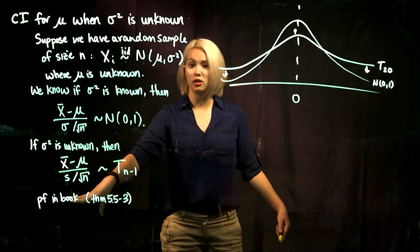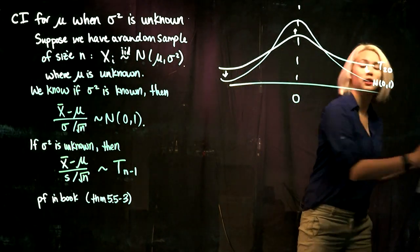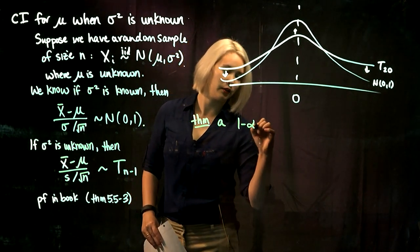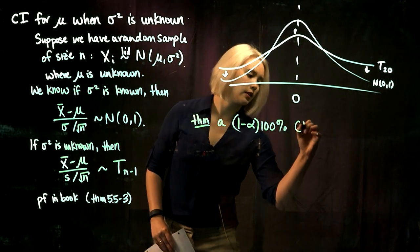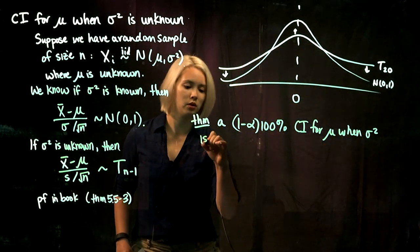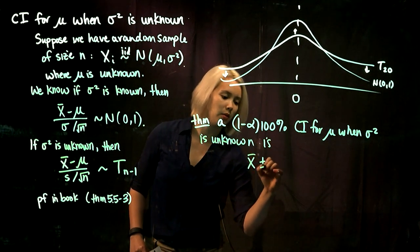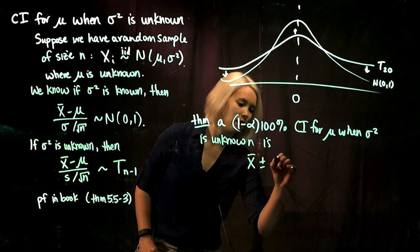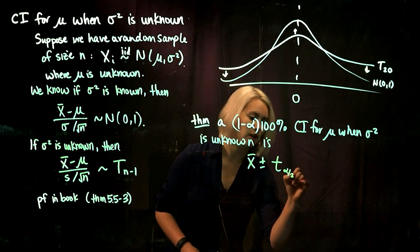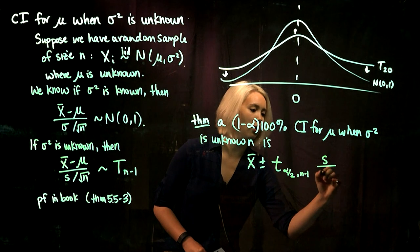This is the distribution we'll use when constructing confidence intervals. Our theorem: a 1 minus alpha times 100% confidence interval for mu when sigma squared is unknown is the sample mean plus or minus a quantile from the t-distribution such that we have alpha over 2 in the tail, using n minus 1 degrees of freedom, times s over root n.